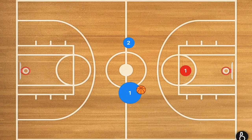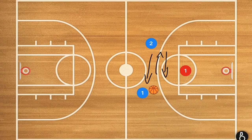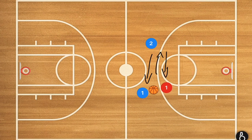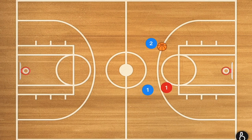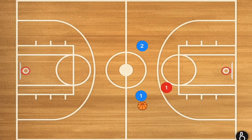Another option is players one and two can pass back and forth with each other until player one red commits to one of those two players. As soon as that happens, that last pass will be a layup.